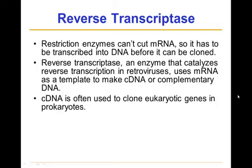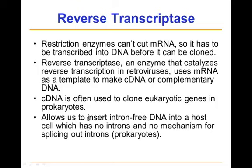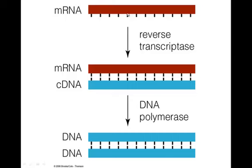All those steps boil down to one sentence: cDNA is often used to clone eukaryotic genes in prokaryotes. It allows us to insert intron-free DNA into a host cell — such as bacteria — which has no introns and no mechanism for splicing them out. This diagram shows the messenger RNA from a eukaryote with no introns, which we use reverse transcriptase to make into cDNA, then DNA polymerase to make it double-stranded, and it can then be inserted into a plasmid in a bacterium.